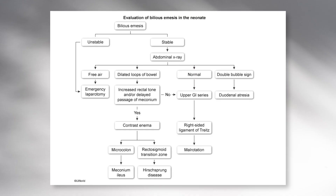Usually when we get a neonate that presents with bilious vomiting, we first evaluate whether they are stable or unstable. If they are unstable — low blood pressure, any signs of instability — we go straight to an emergency laparotomy. If the patient is stable, the next best step is an abdominal x-ray. If we see free air in the abdomen, that also requires an emergency laparotomy.